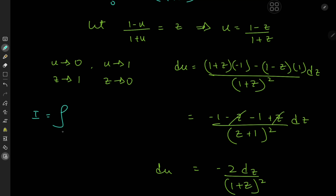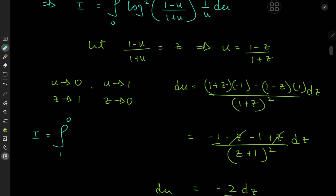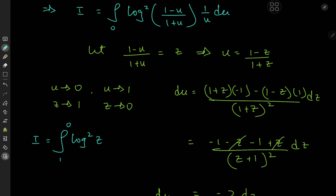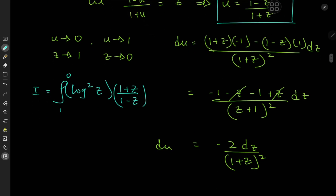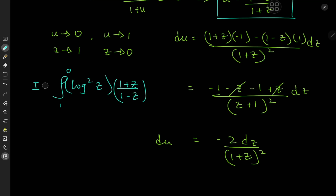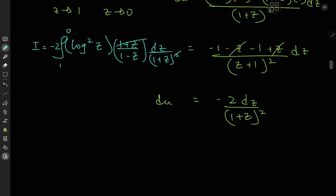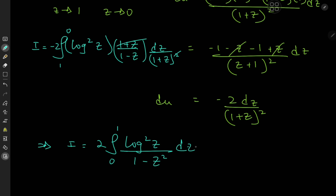Returning to the integration: the log squared of (1-u)/(1+u) becomes log²(z). The reciprocal of u becomes (1+z)/(1-z). With the differential -2dz/(1+z)², we get nice cancellation. Switching limits and combining factors, i equals twice the integral from 0 to 1 of log²(z) divided by (1 - z²) dz.